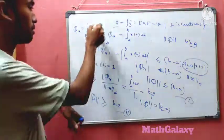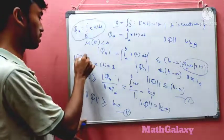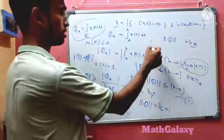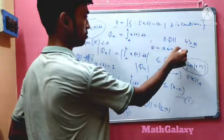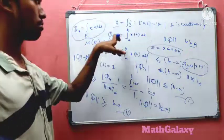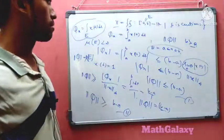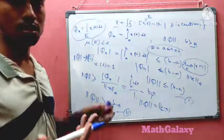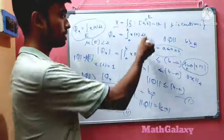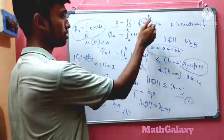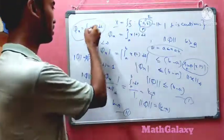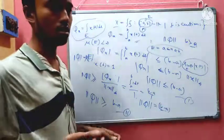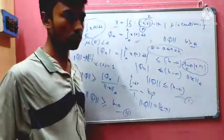We can generalize this result: if the functional is defined by integration over a measurable set E with finite measure, then the norm of the functional equals the measure of E. Here we took E = [a, b] specifically, but E can be any measurable subset of ℝ. For more general topological spaces, one would replace this with an appropriate measure such as a Haar measure or another suitable measure. Thanks for watching.